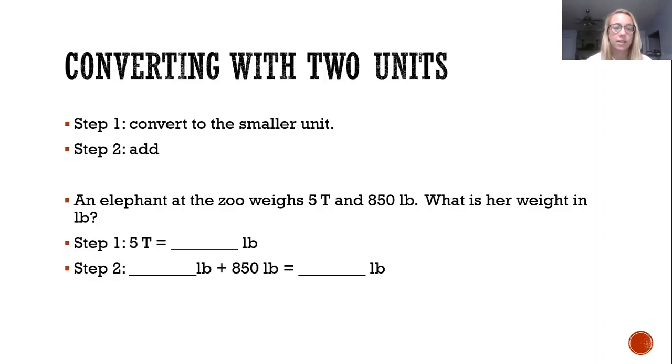So for example, an elephant at the zoo weighs 5 tons and 850 pounds. What is her weight in pounds? So first I need to take 5 tons and I need to convert that into pounds. So I need to convert my bigger unit to my smaller unit. So 5 tons is equal to 10,000 pounds because I multiply by 2,000. 5 times 2,000 equals 10,000.